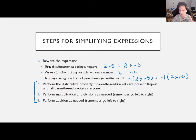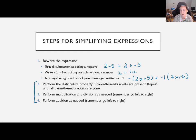Step 3: do any multiplications and divisions — generally we'll only have multiplications. Always go left to right. Step 4: do any additions. Because we've rewritten all subtractions as adding a negative, they're all addition now. Add everything together that are like terms, going left to right, and then you'll be done.